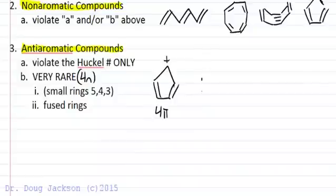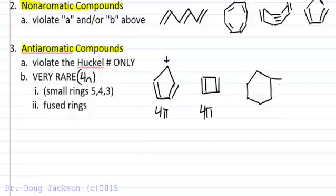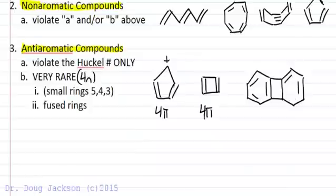Cyclobutadiene also has 4 pi electrons and is anti-aromatic. Fused rings can also be anti-aromatic — for example, a compound where planarity is forced by two rings fused together by a four-membered bridge. Counting 2, 4, 6, 8, 10, 12 pi electrons gives 4 times 3, which is 4n. We force planarity, have a cyclic array of p orbitals, and a non-Hückel number, making it anti-aromatic.